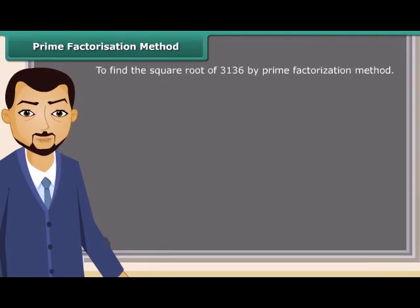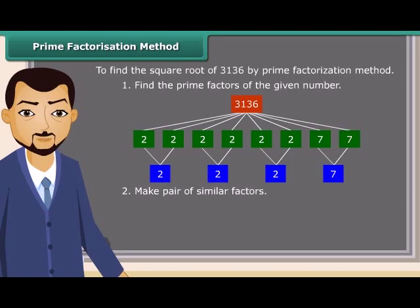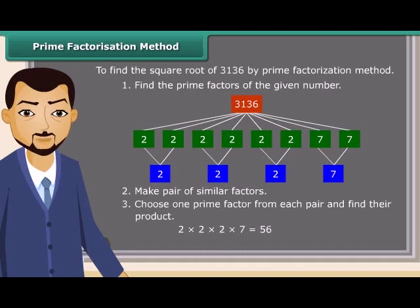Now we will try to find the square root of a number by prime factorization method by following some steps. First of all, find the prime factors of the given number. Now make pair of similar factors. After that, choose one prime factor from each pair and find their product. So the product thus obtained is the square root of the given number.